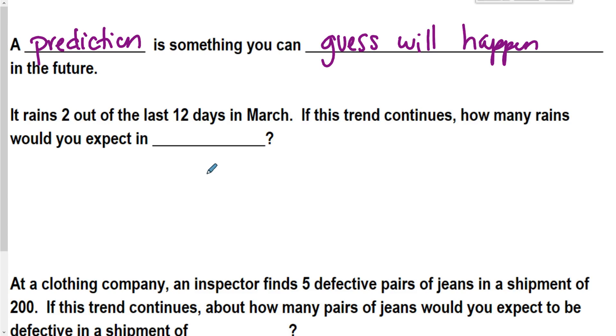If I find out it rains two out of the last 12 days in March, if this continues, how many rains would you expect then in April?